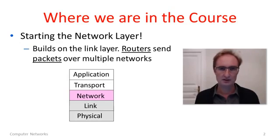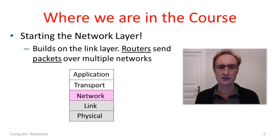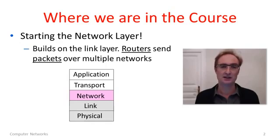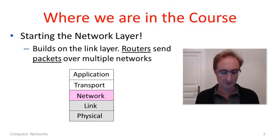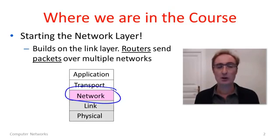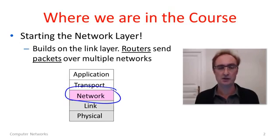As you can see from this reference model, we've gone through the physical and link layers, so you know how to send information and bits across a link instead of signals, and you know how to send frames of information across connected links. Now we're going to move on to the network layer, which builds on the link layer. Its job is to have routers send packets of information across multiple connected networks.